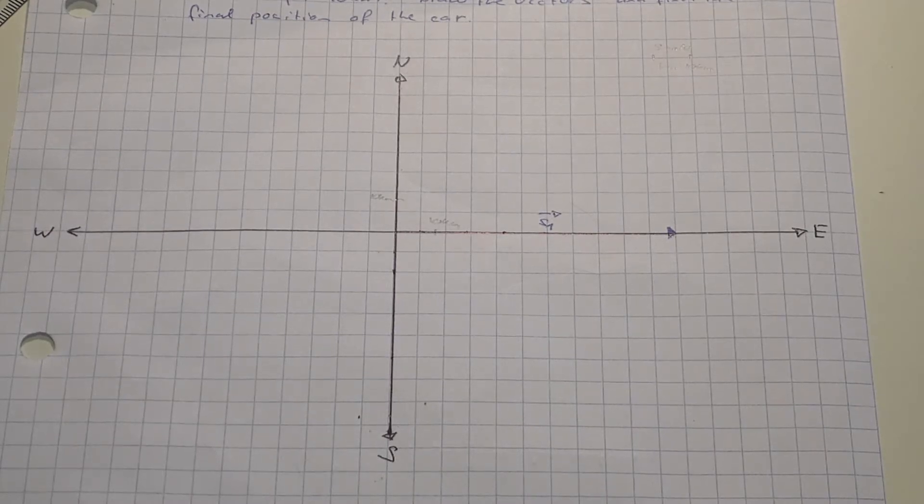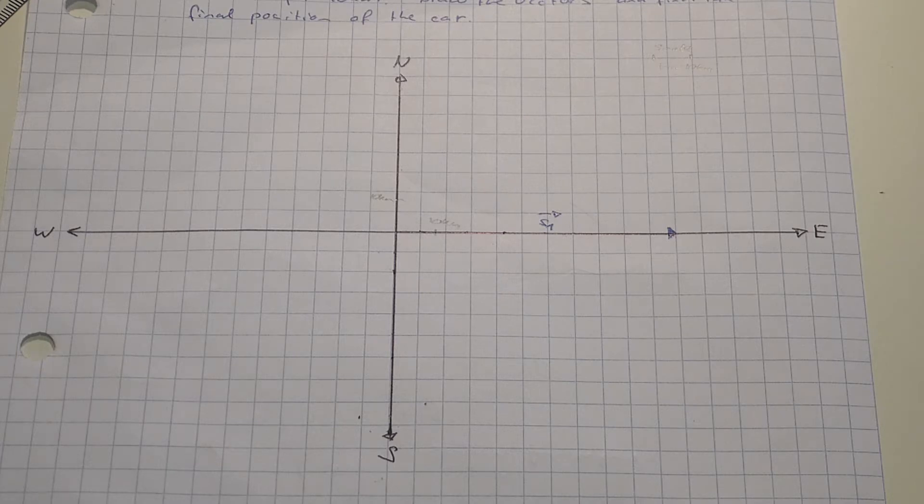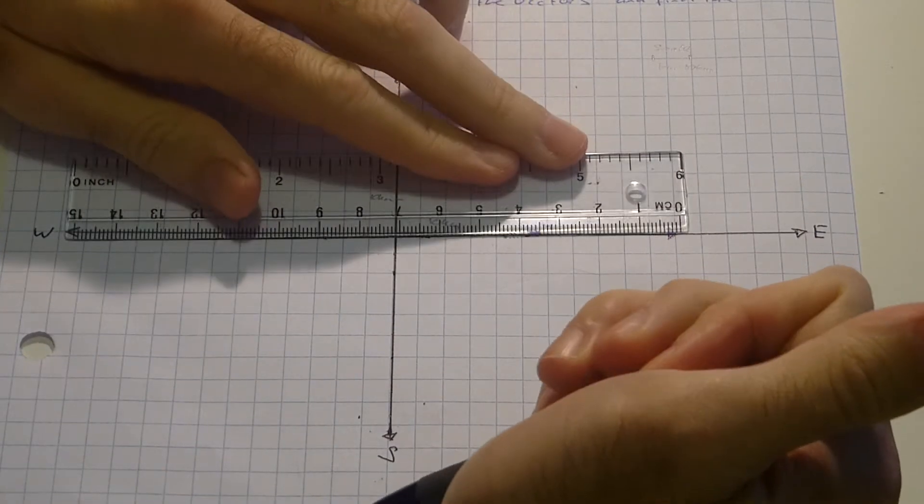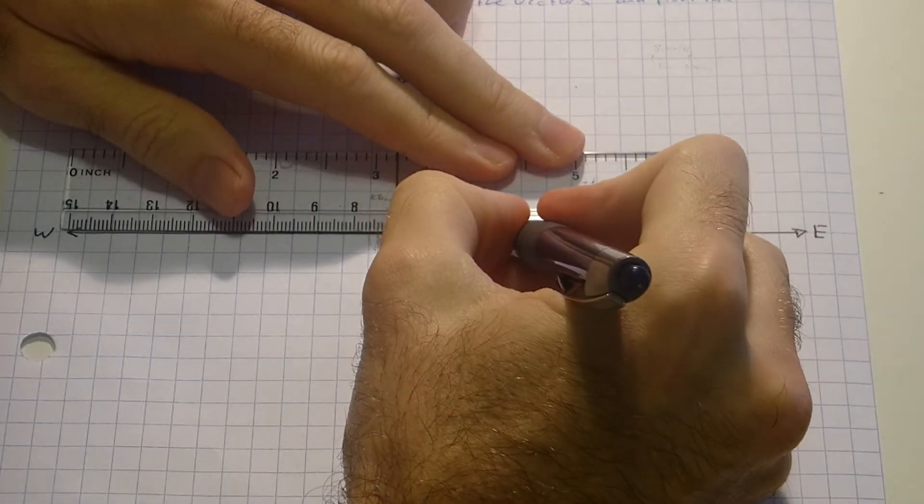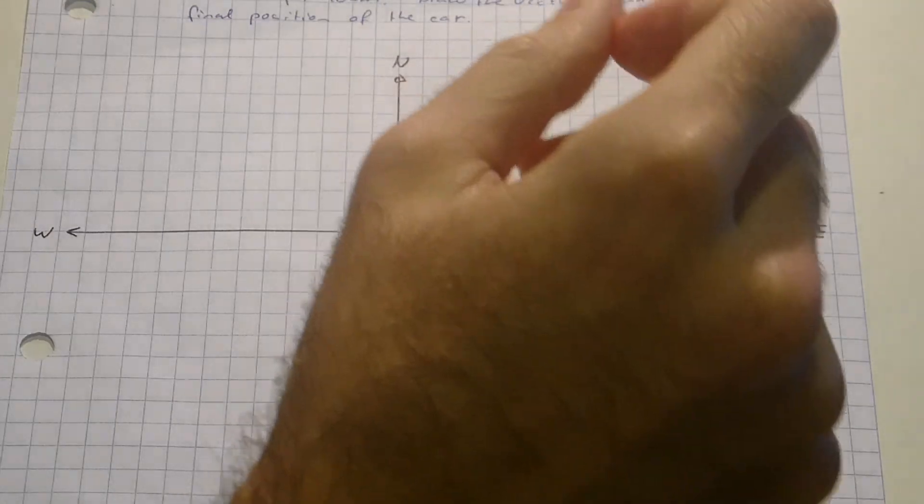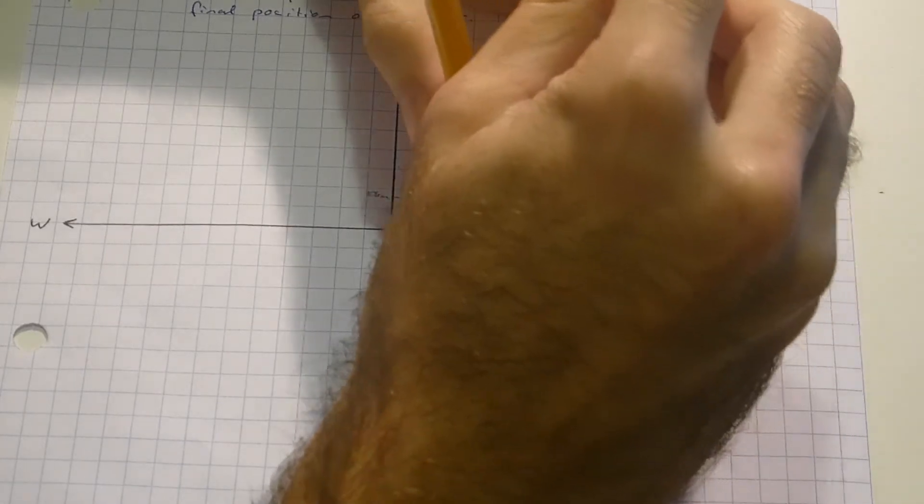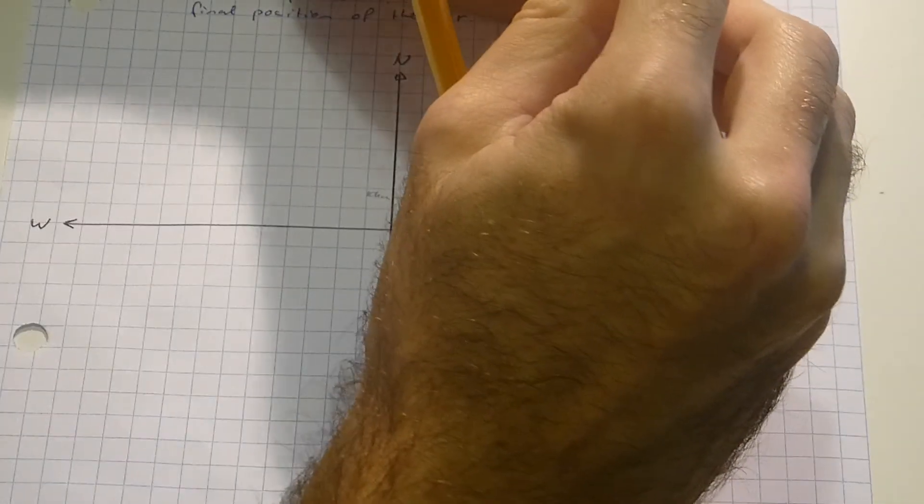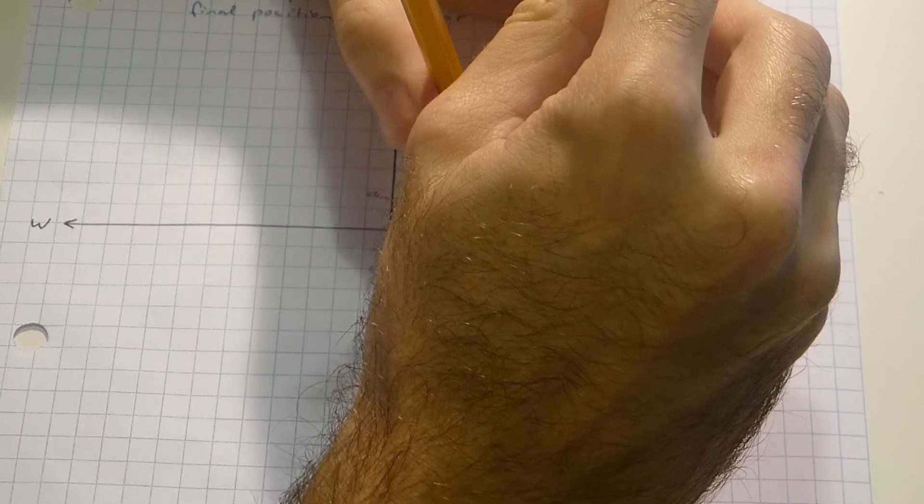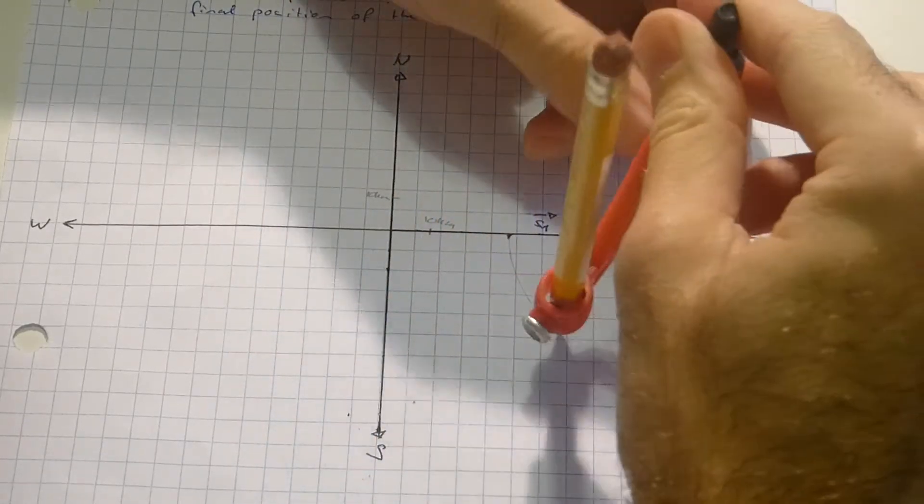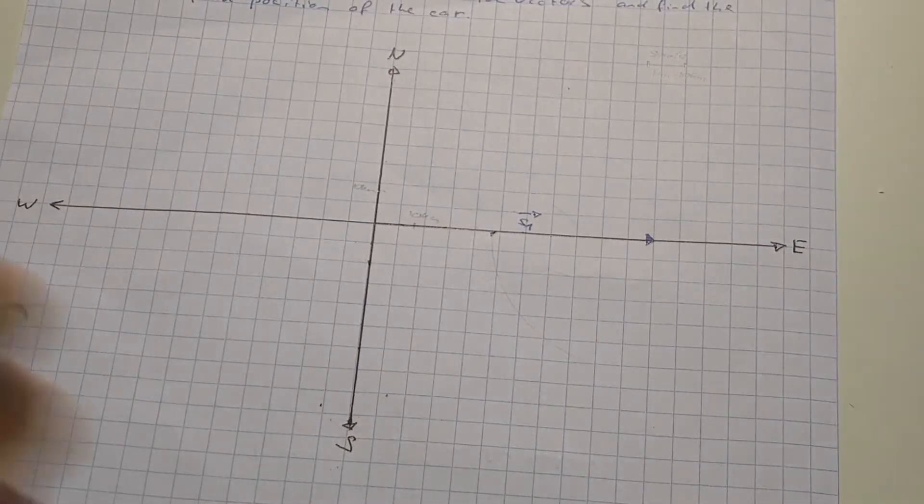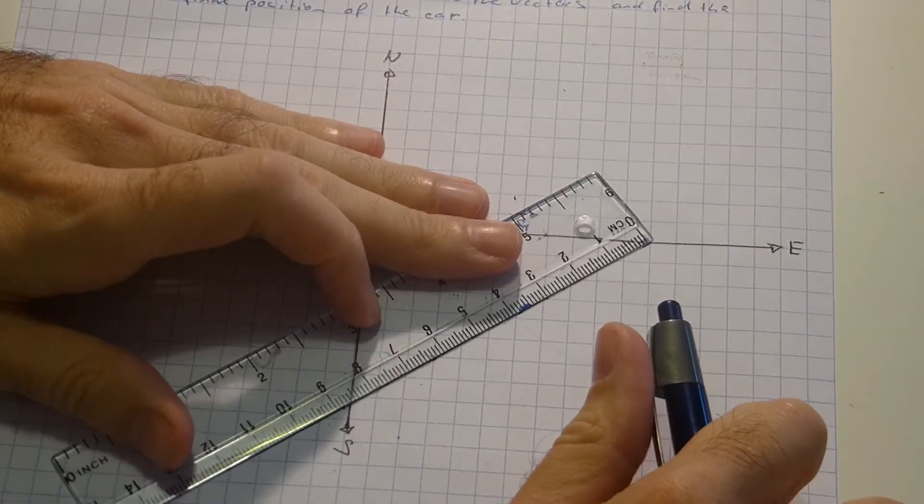Now my second one will go 40 degrees south of west for 40 km. So first let's have a look what is 40 km. 40 km would be 4 cm. So I would end up somewhere here. Let's see where we could end up with that. That should be 4 cm correct.